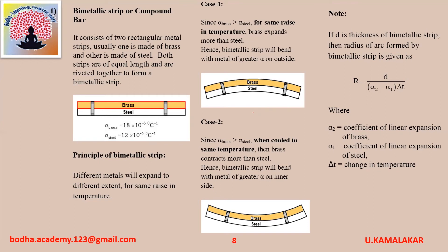Note: if d is the thickness of the bimetallic strip, then the radius of the arc formed by the bimetallic strip is given as r equals d divided by (alpha2 minus alpha1) into delta T, where alpha2 is coefficient of linear expansion of brass, alpha1 is coefficient of linear expansion of steel, and delta T is change in temperature.